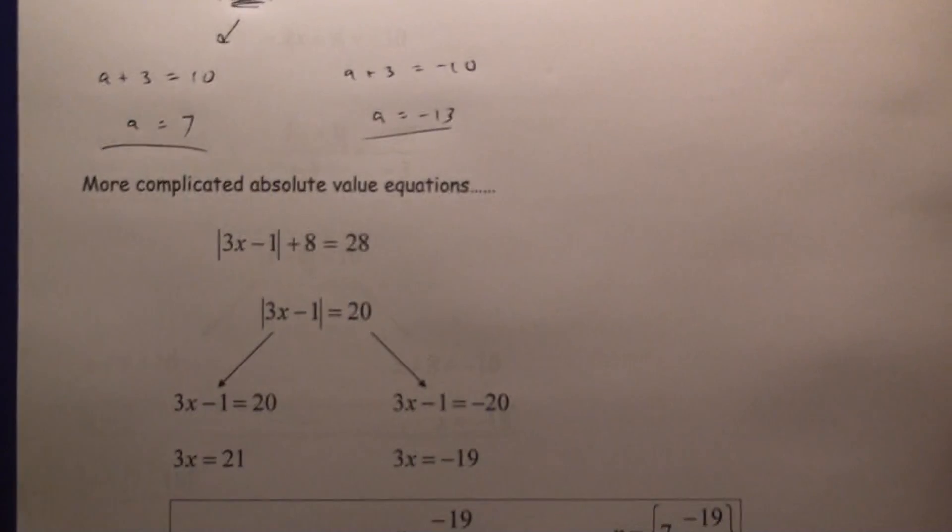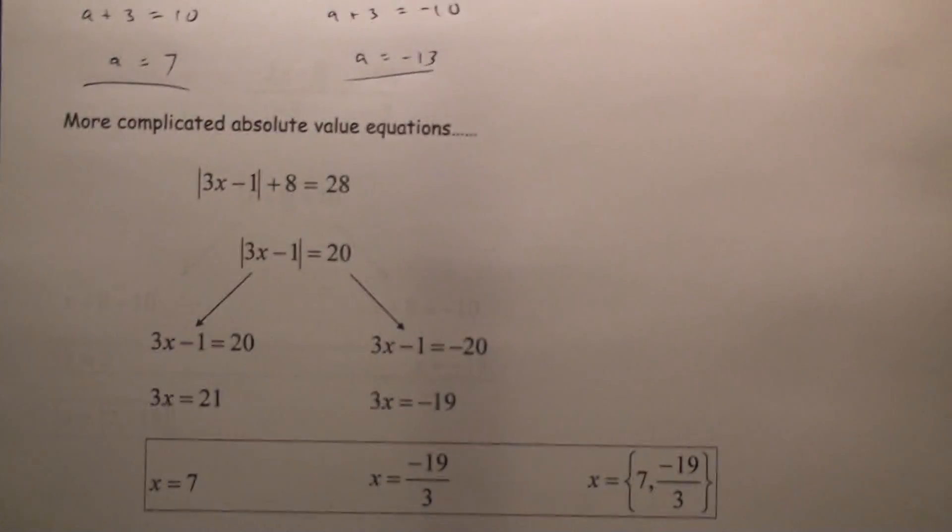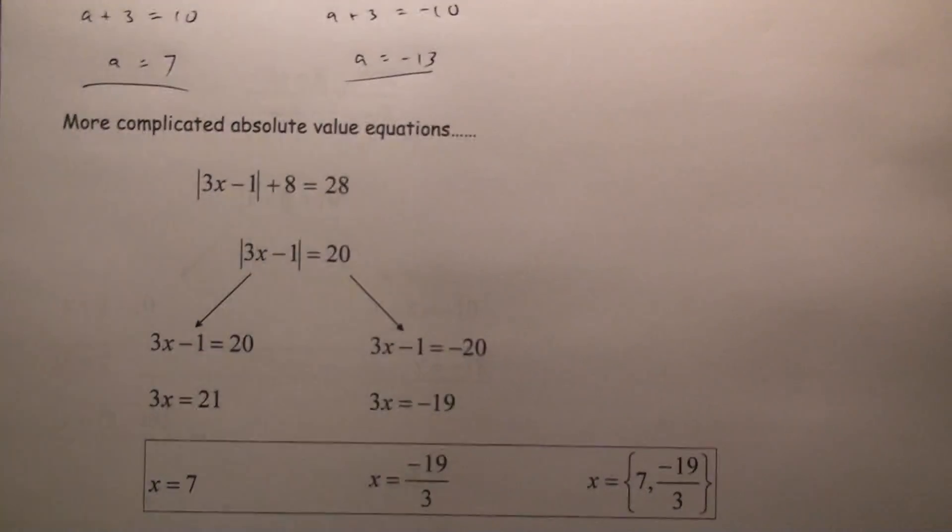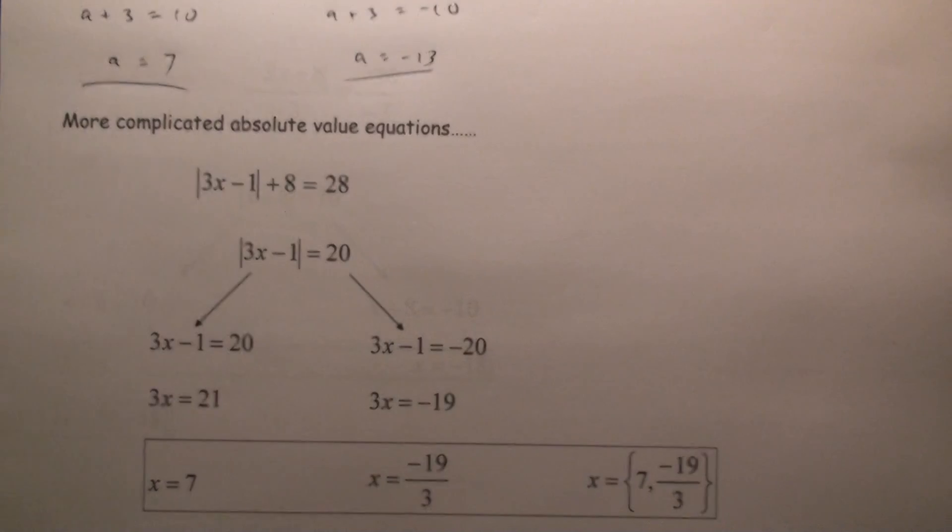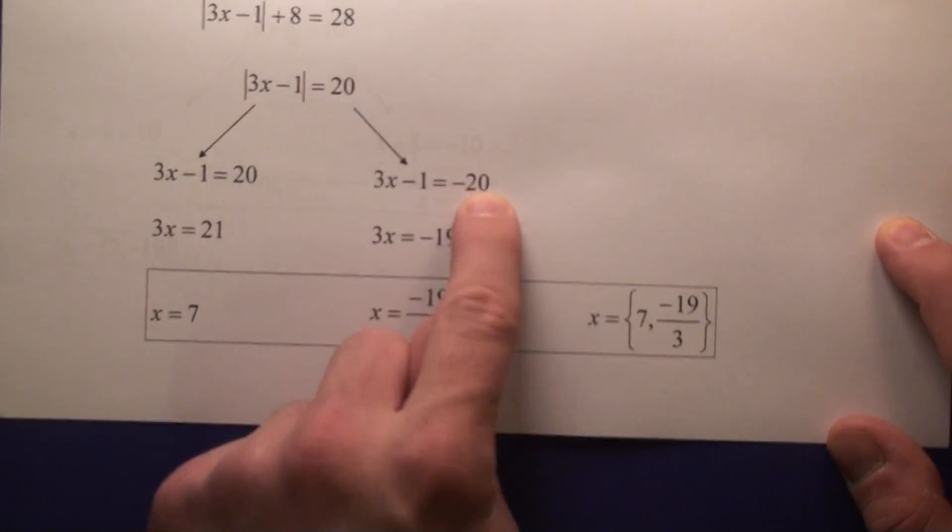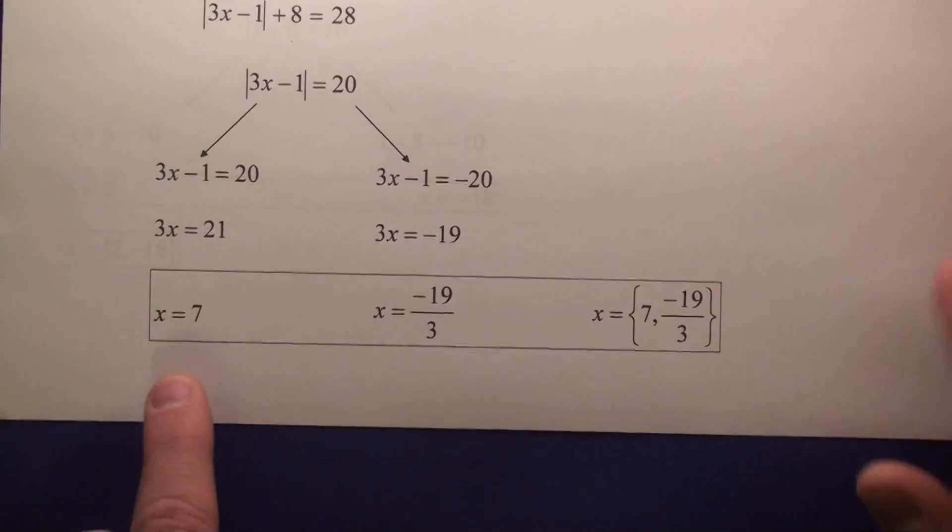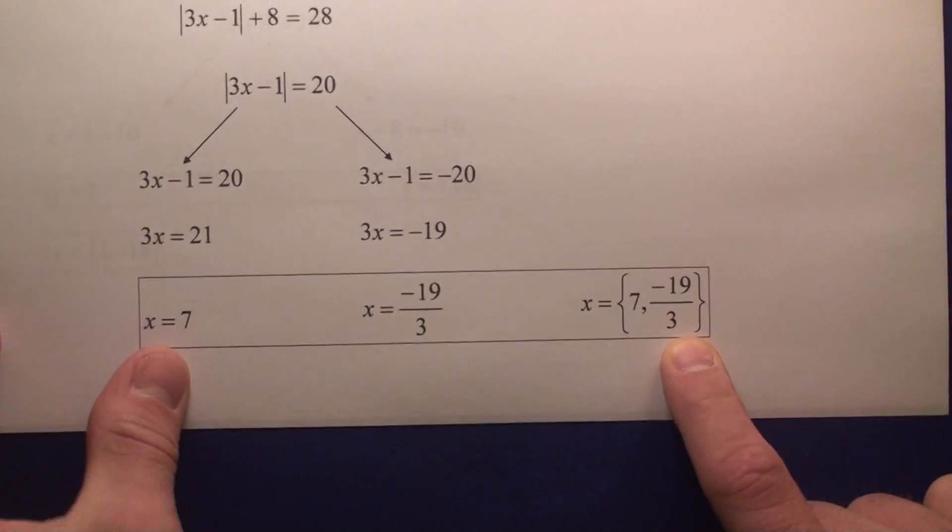Now, a more complicated absolute value equation. What you're going to do first is subtract 8 from both sides. You must isolate the absolute value first, just like you would isolate the x squared term if you were solving a quadratic. Then you just do exactly what we've been doing before: equals 20, equals negative 20. You get two answers, which you solve and put in a solution set.